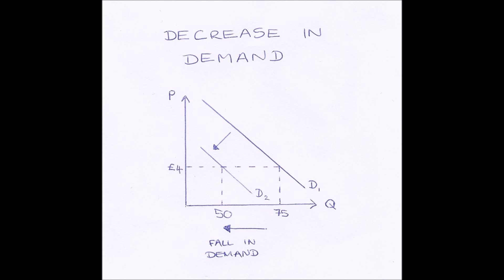But now demand decreases because the good goes out of fashion. So the demand curve shifts left to D2. Now if we read across from £4 to D2 and then read down, our new quantity demanded is 50 units. So our quantity demanded has fallen by 25 units from 75 to 50. So a shift left in the demand curve results in a fall in demand.